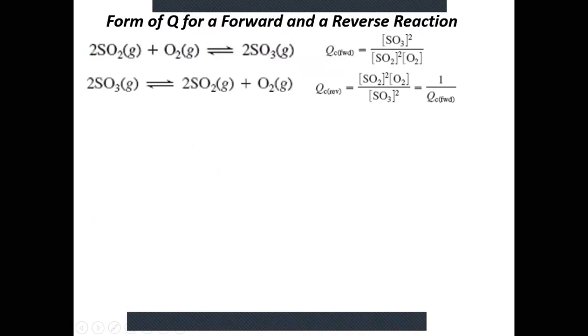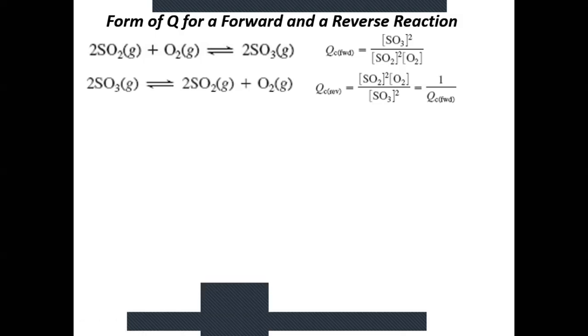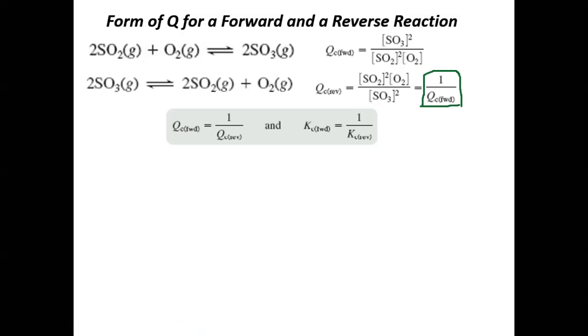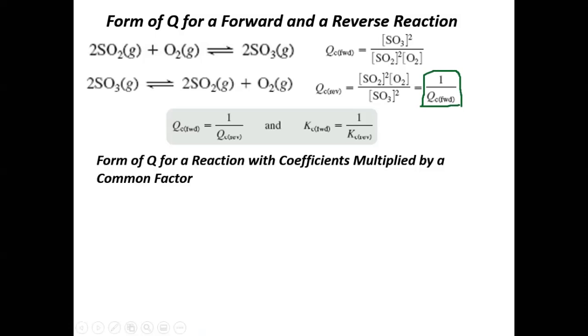For the decomposition of lead nitrate to lead oxide and O2 gas: solids and liquids are excluded from the equilibrium expression. Only O2 is a gas and appears in the expression. Products go on top, so C is the correct answer — it has O2 raised to the fourth power in the numerator.